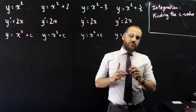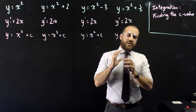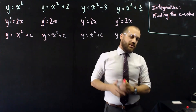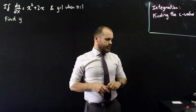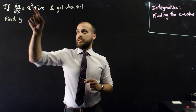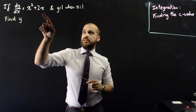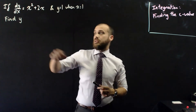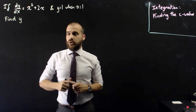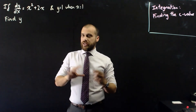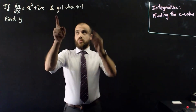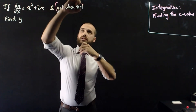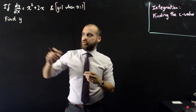Let's look at a question where we're given enough information to find the c value. If dy/dx equals x squared plus 2x, and y equals 1 when x equals 1, find y. This is a standard integration question with a little extra information that we'll find useful later on.